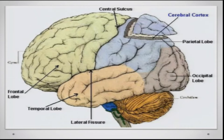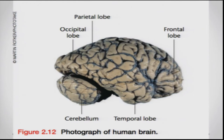Here you can see in more detail the layer of tissue called the cerebral cortex and the division between the parietal lobe, the frontal lobe, temporal lobe, and the occipital lobe. This is also a real photograph of a human brain where you can directly see where each of these lobes is situated.